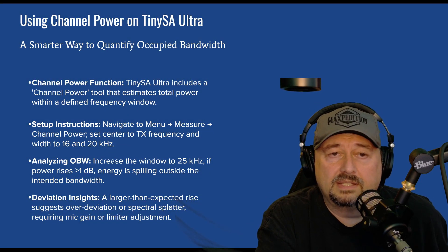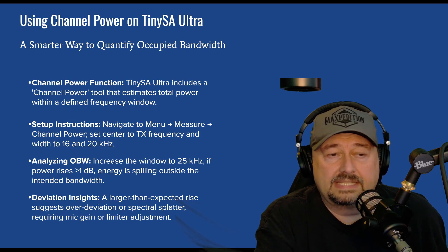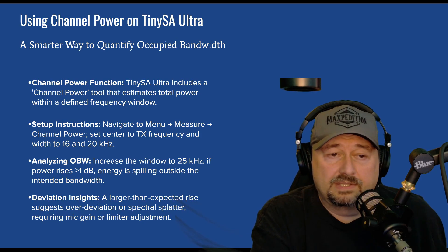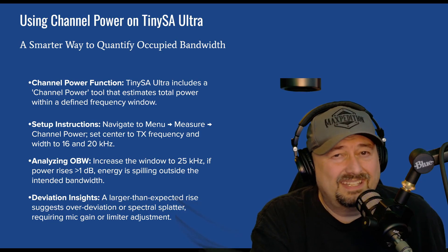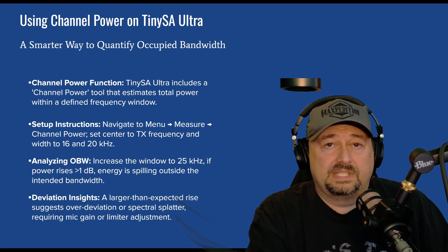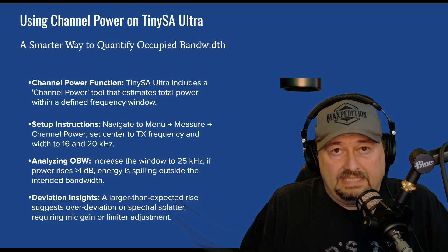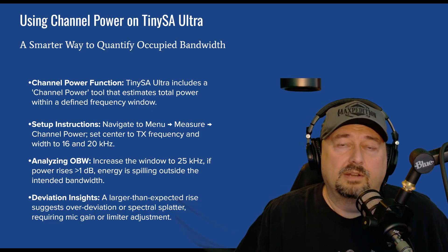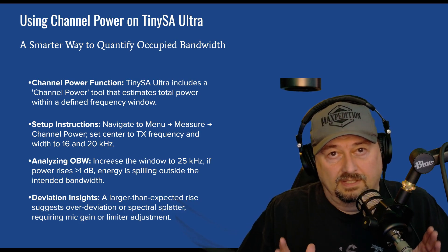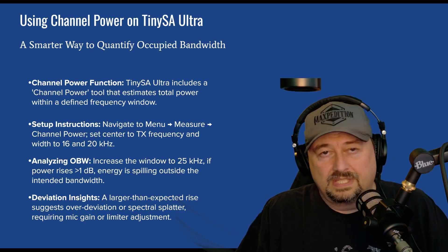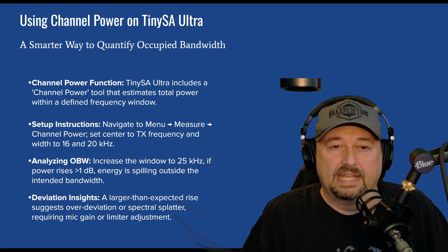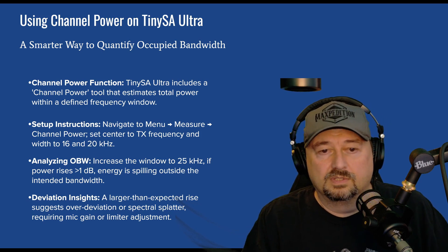The better option is the channel power setting on the TinySA — there's a dedicated measurement for that. Occupied bandwidth tells you your signal takes up this much space; channel power tells you how much of your power is in a particular channel. They show the same data but in different ways, and that's what we're going to use.